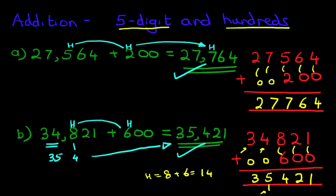And that is the addition of 5-digit numbers and hundreds. You can do this in the vertical format or just as easily in the horizontal format.